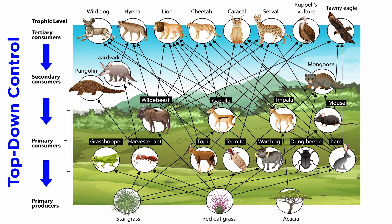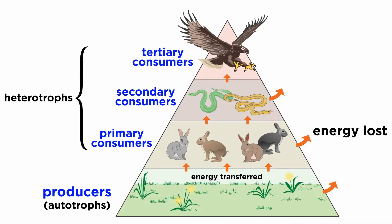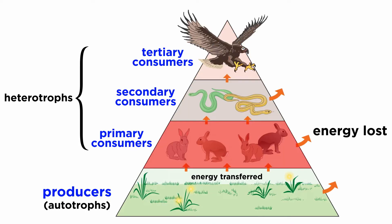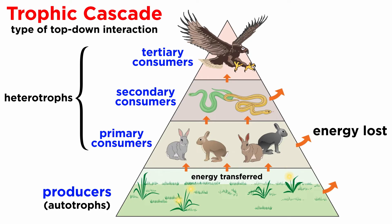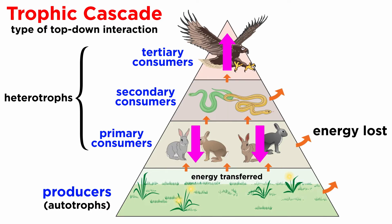Top-down control occurs when the population density of a consumer can control that of its resource. For example, predator populations can control the abundance of prey species. Under top-down control, the abundance or biomass of lower trophic levels depends on effects from consumers at higher trophic levels. A trophic cascade is a type of top-down interaction that describes the indirect effects of predators. In a trophic cascade, predators induce effects that cascade down the food chain and affect biomass of organisms at least two trophic levels away.